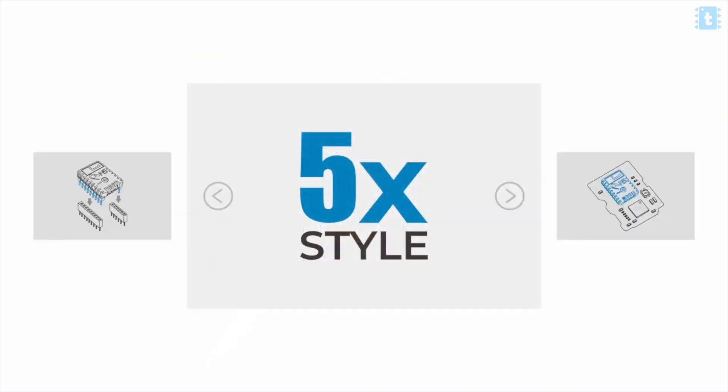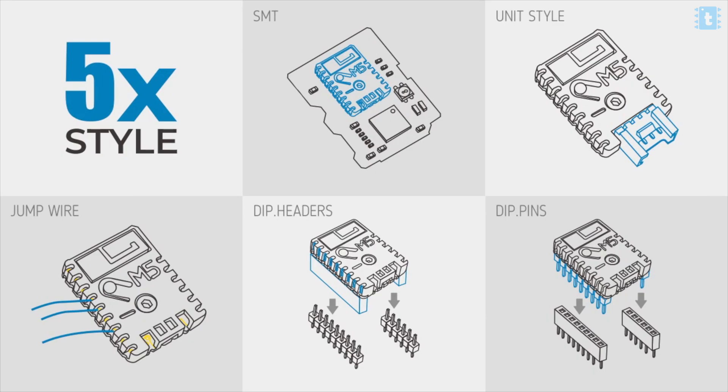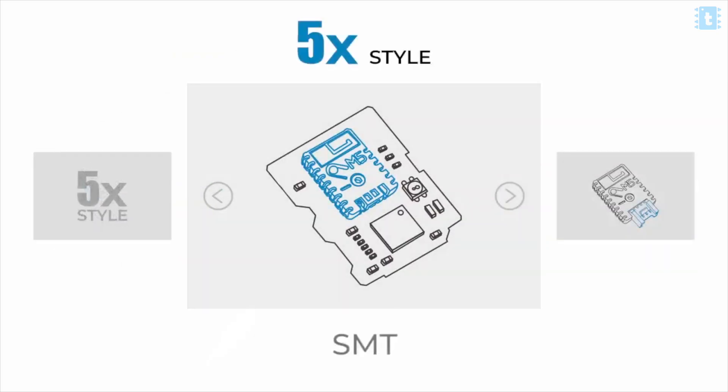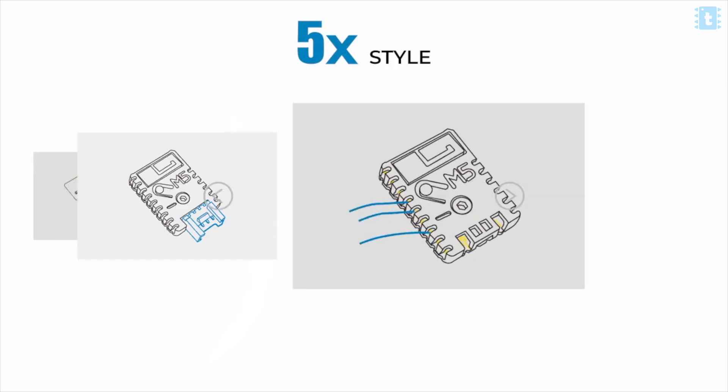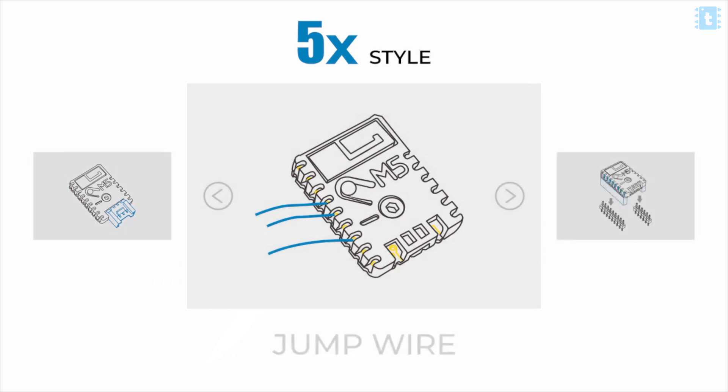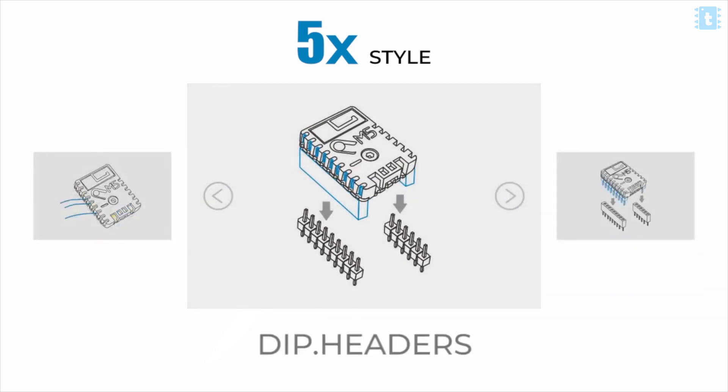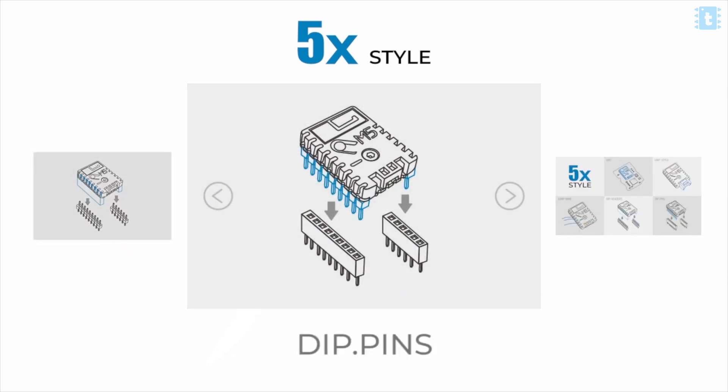The makers of this product say it has a 5X style, meaning it can be interfaced with our project in five different ways. These are the five different ways: you can directly solder it as an SMT component, use it as a unit style compatible with all other M5 stack product extensions, add jumper wires directly, and use male and female connectors. This is very flexible in terms of interfacing.